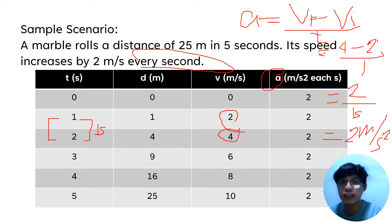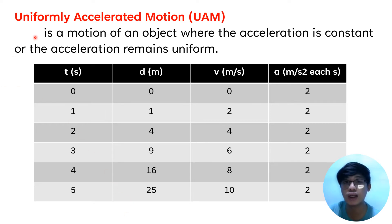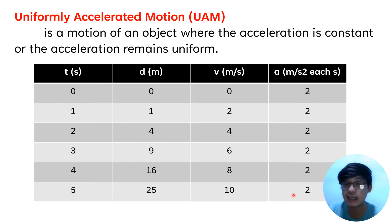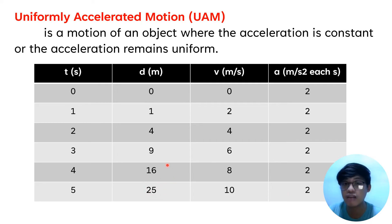This kind of scenario demonstrates uniformly accelerated motion. Uniformly accelerated motion is a motion of an object where the acceleration is constant — it remains uniform. From the word itself, 'uniformly' means constant; the acceleration does not change for the entire motion. As seen in the table, the acceleration is consistently 2 m/s² until the marble reaches 25 meters after 5 seconds.